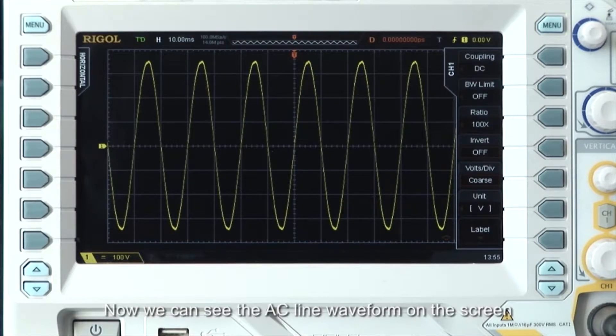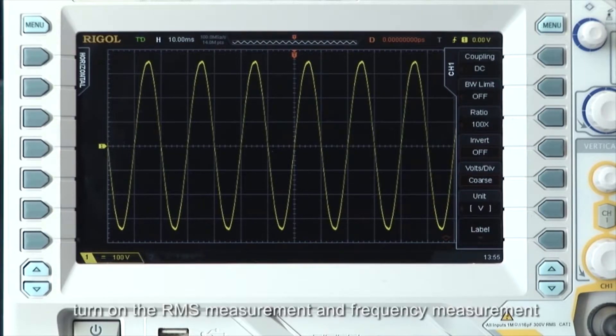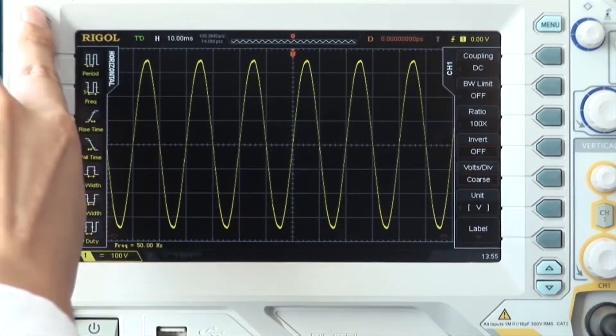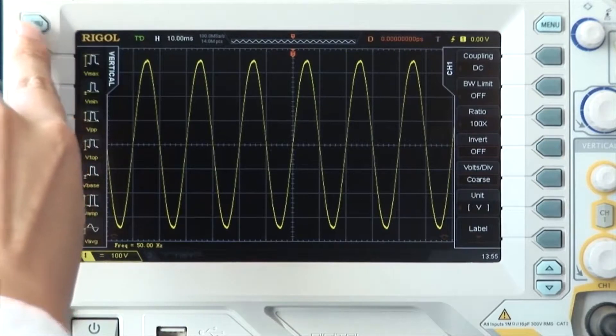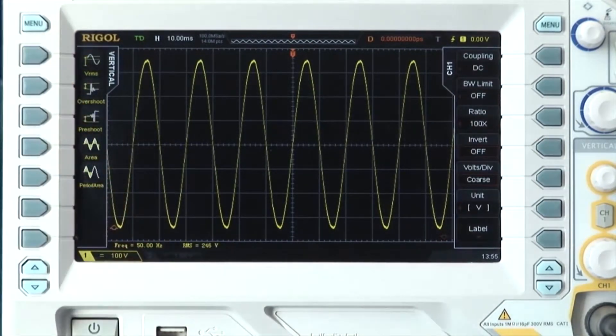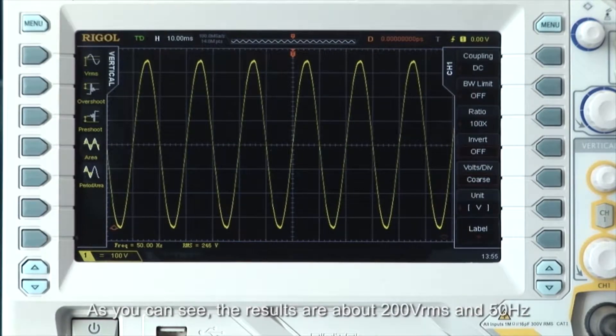Now we can see the AC line waveform on the screen. Turn on the RMS measurement and frequency measurement. As you can see, the results are about 200 volts RMS and 50 hertz.